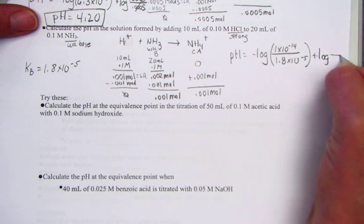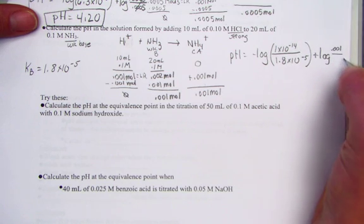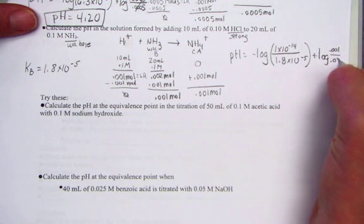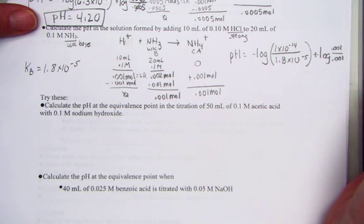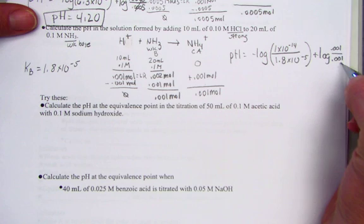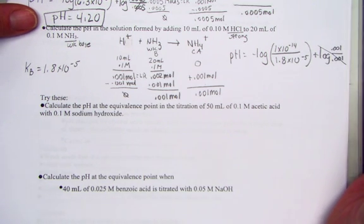Plus the log of the ratio of 0.001 moles of our conjugate base over 0.001 moles of the conjugate acid. Base over acid - moles drop out because they are equivalent.